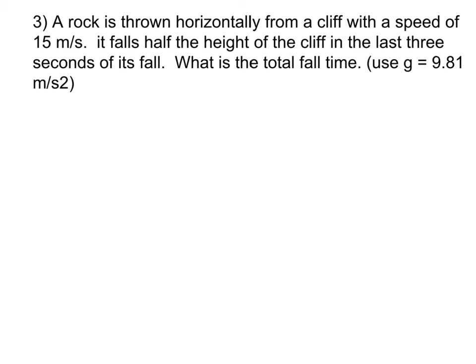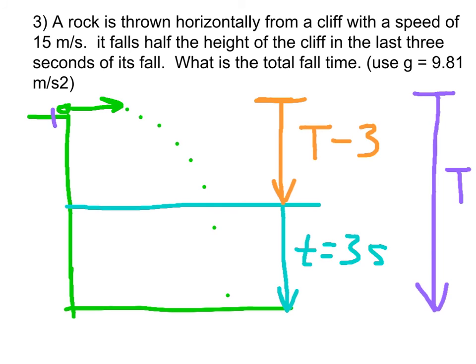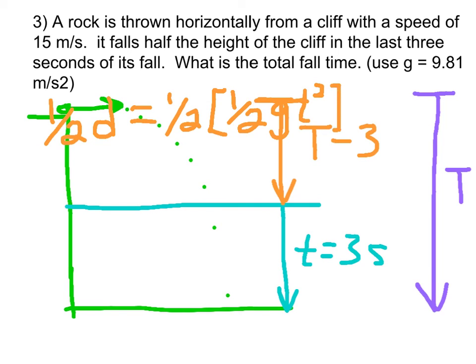So I start out saying that my orange distance, which is the first distance, is going to be half the total distance. And half the total distance is going to be half the equation. My regular equation is one half a t squared, but I'm going to use one half g t squared. And I want to take half of that, and that's going to be the first portion, the first half that the rock falls.